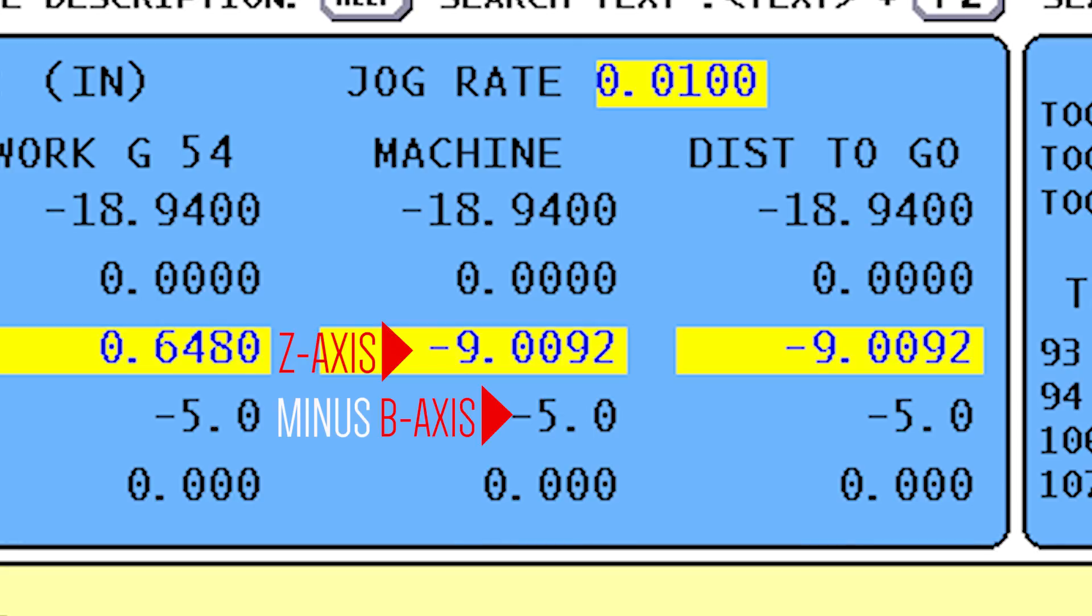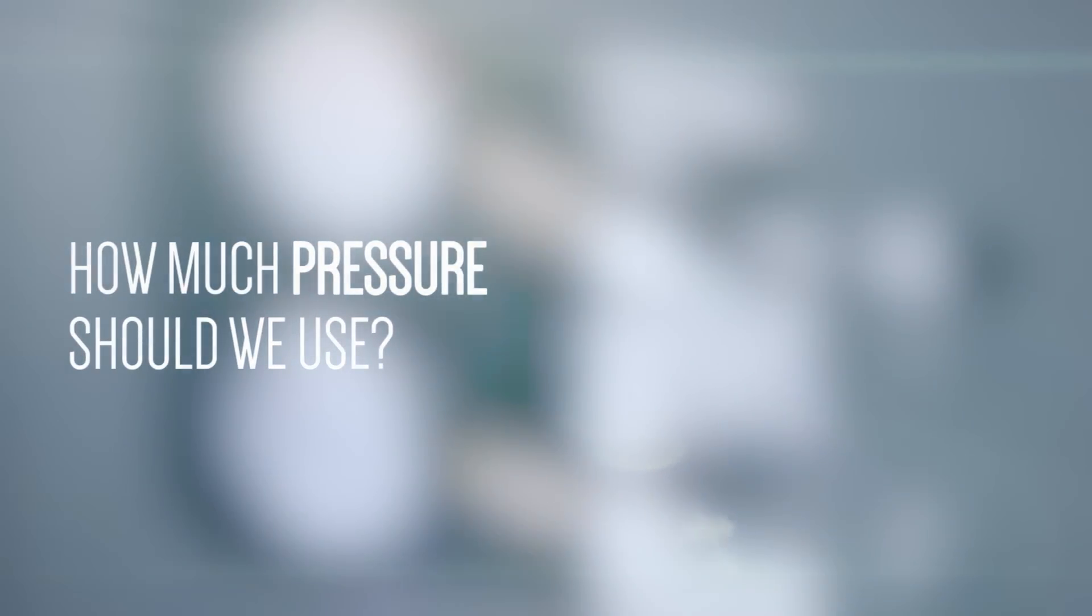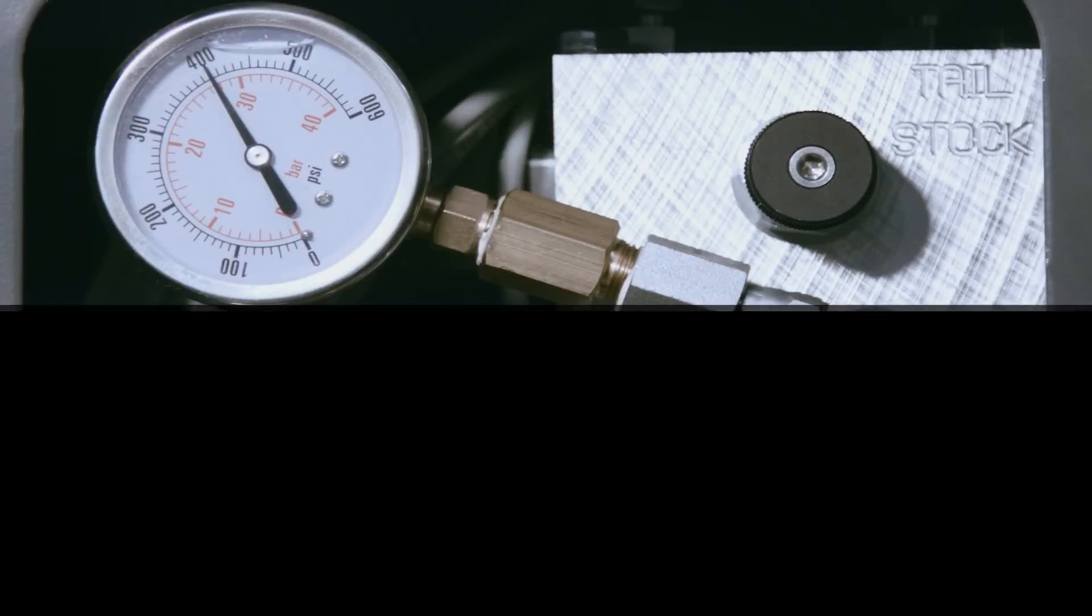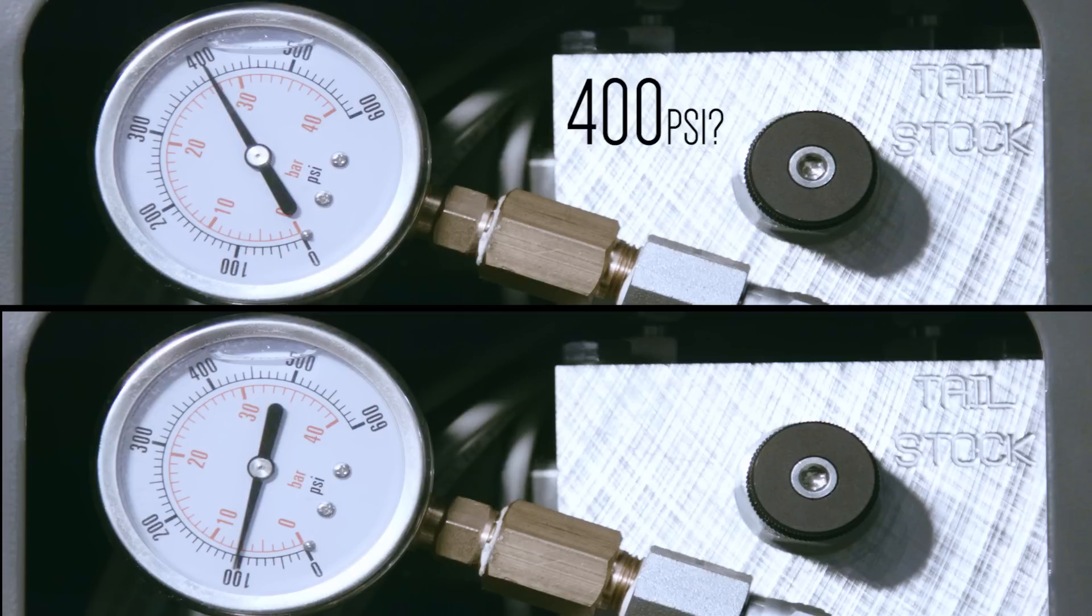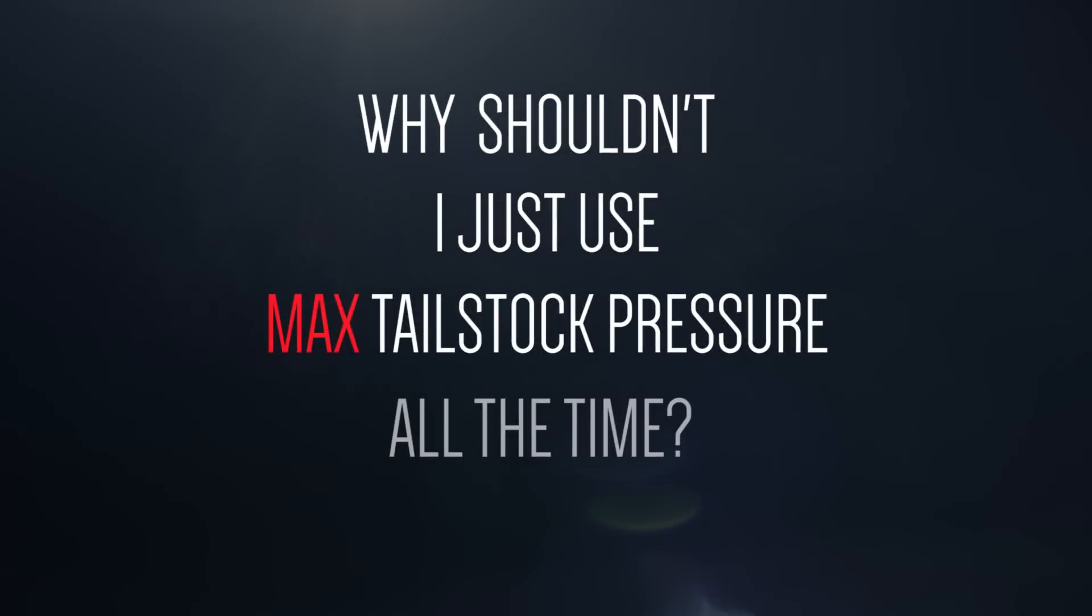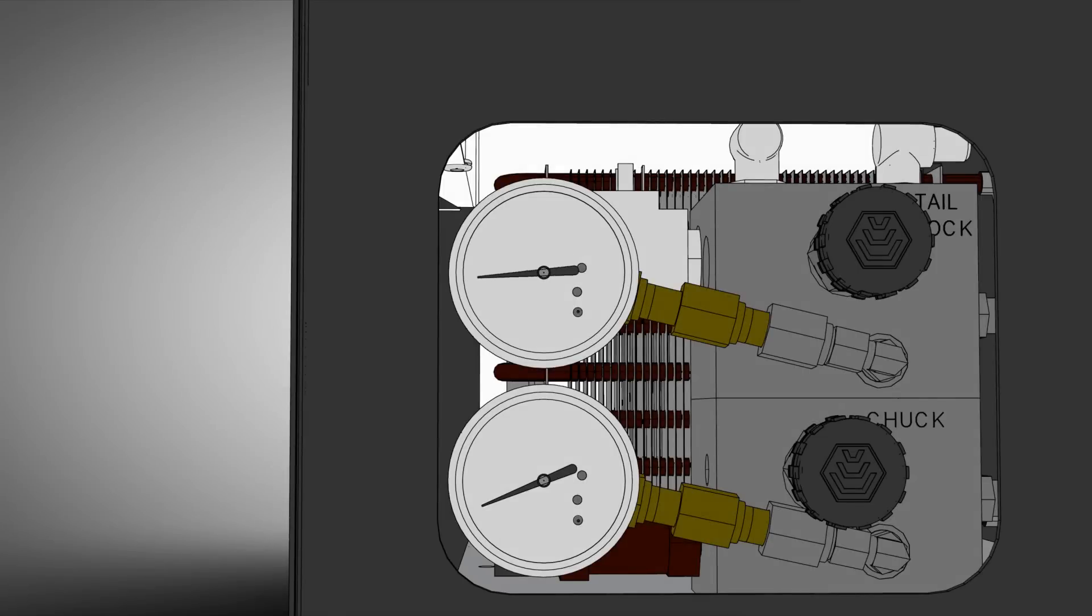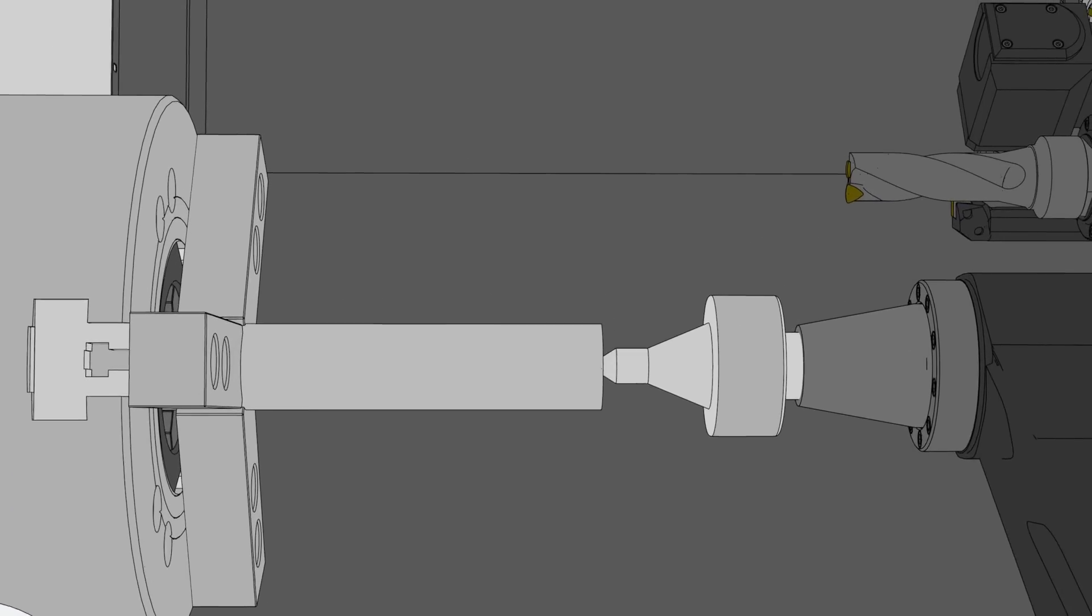So we know how to control the tailstock's position and protect it from crashing. We're ready to clamp our part. But one question remains, how much tailstock pressure should we use? Many machinists believe it's best to use as much tailstock pressure as possible so the part doesn't come out. Others believe you should hold your part with as little pressure as possible so you don't deform your part. You might be thinking, well, why shouldn't I just use max tailstock pressure all the time? Well, one important reason is, as tailstock pressure increases, deflection in the workpiece and in the machine also increases.